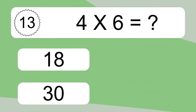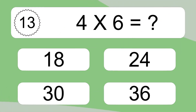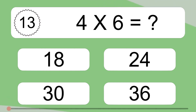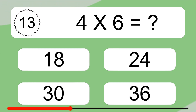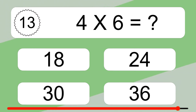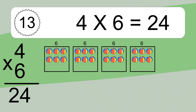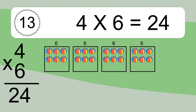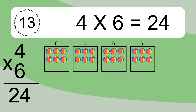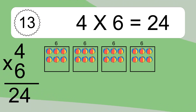4 times 6 equals what? 4 times 6 equals 24. We have 4 boxes, and each box has 6 colorful balls inside. If you count all the balls in all the boxes together, you will have 4 times 6 balls. This equals 24 balls.